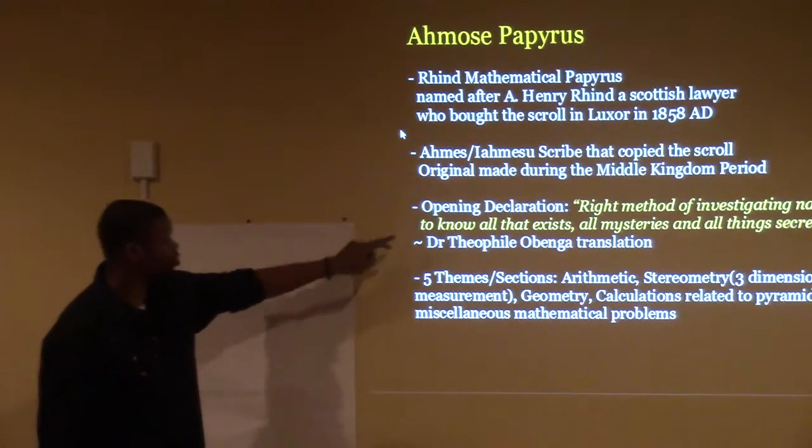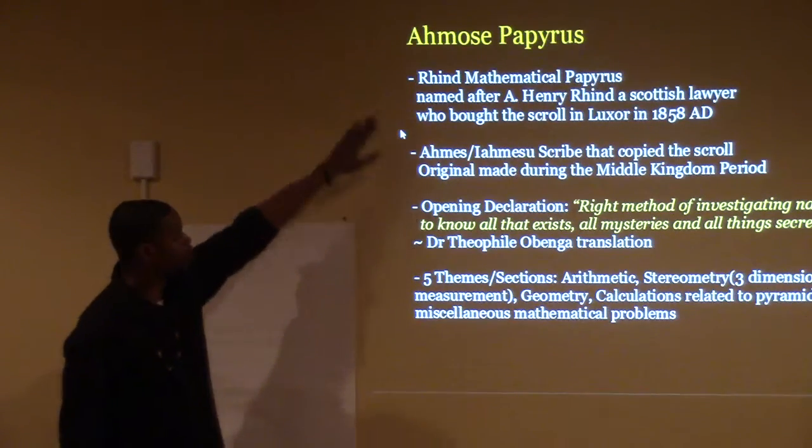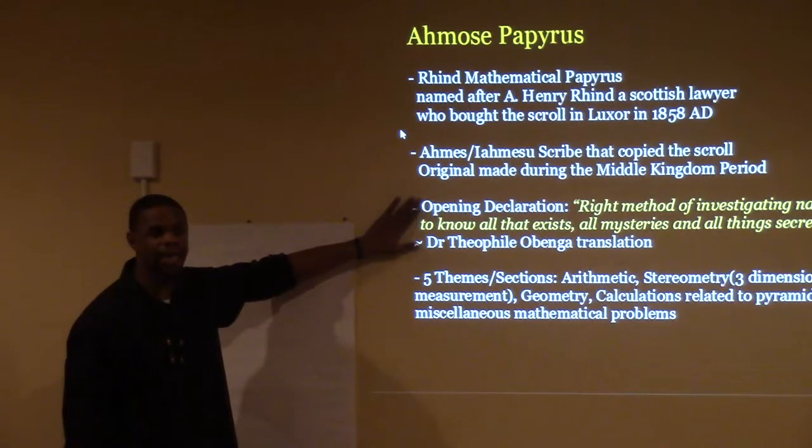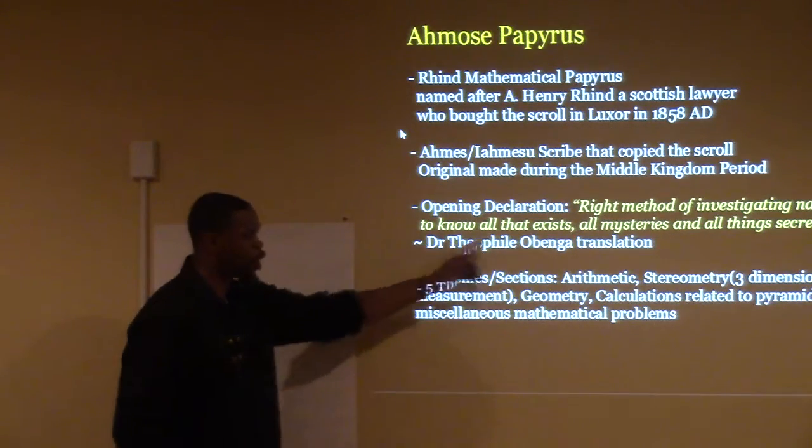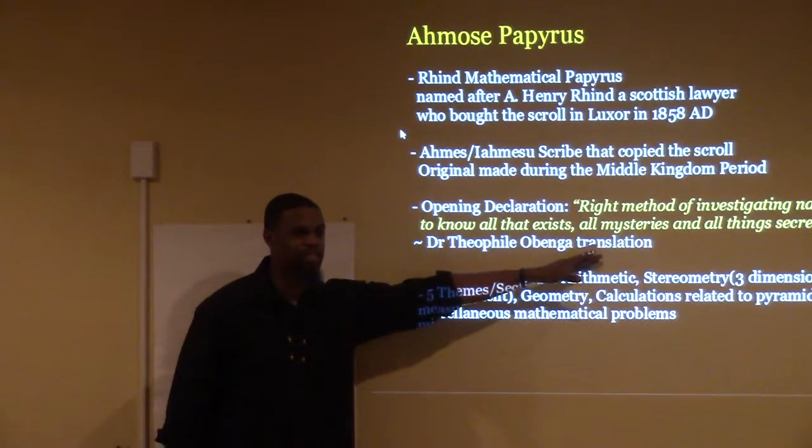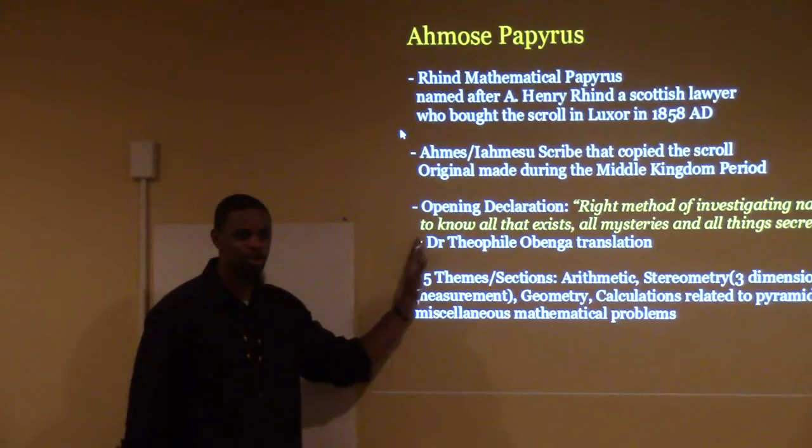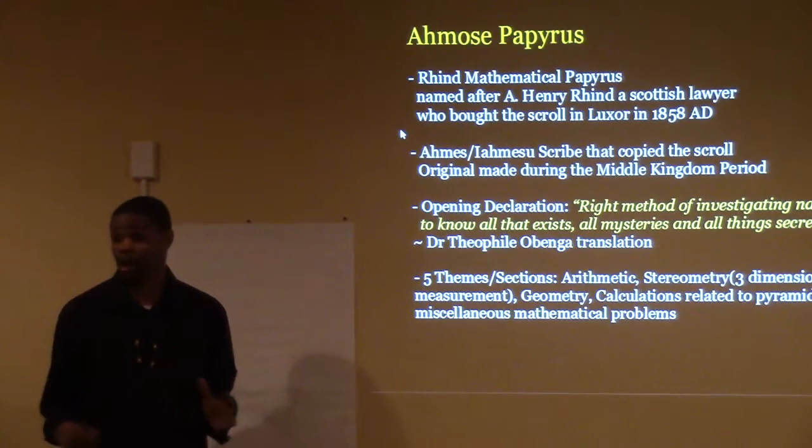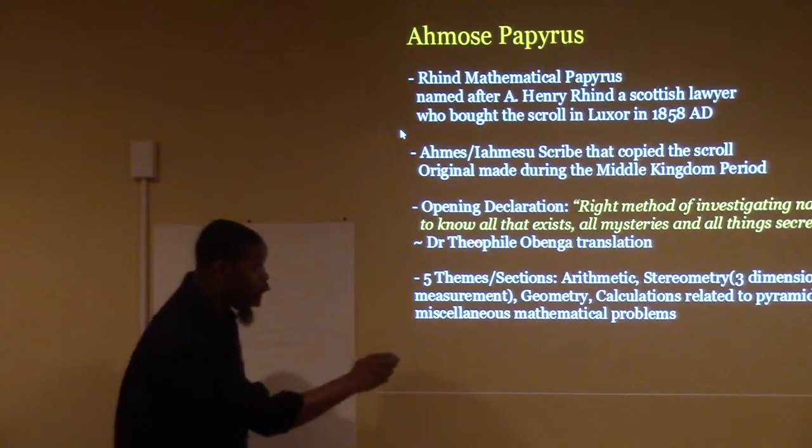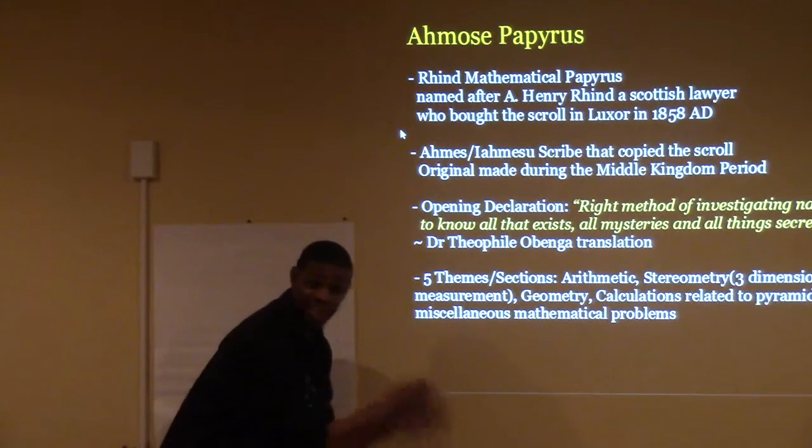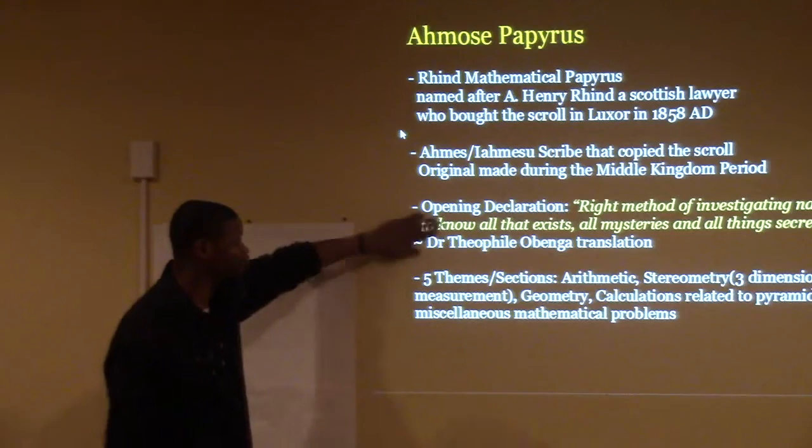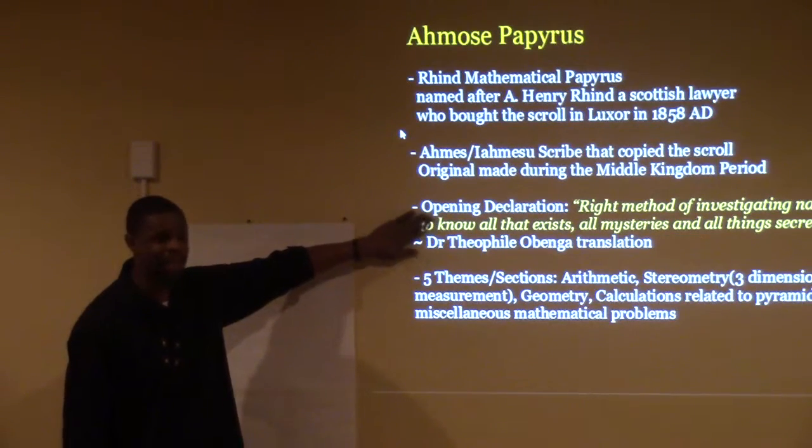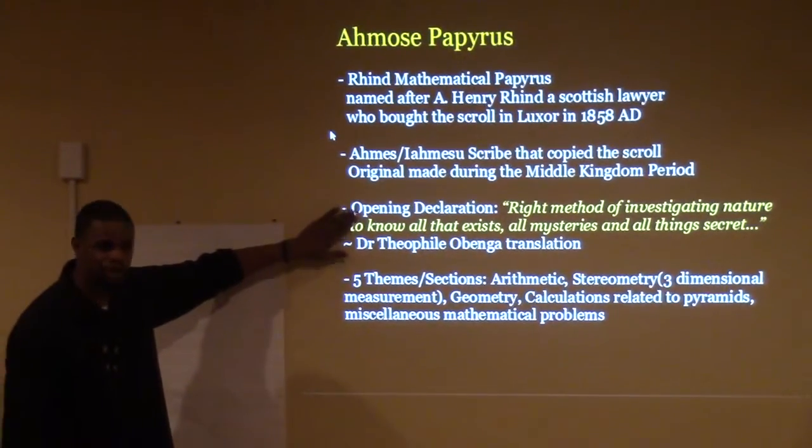Now look at the opening declaration on the Ahmose Papyrus right here. This is where we start getting to the Kemetic view of math. Look how they introduce math to the students. The right method of investigating nature to know all that exists, all mysteries, and all things secret. You tell me this is how you're going to introduce math, you tell me this is what I'm about to learn, I'm excited and ready to go right off the gym. I'm going to know all that exists, all mysteries, and all things secret based on math. Where's my pencil? I'm ready. Let's work. So that's how they introduced it relative to mathematics back in kindergarten. When you start studying this, you're going to know all that exists, unlocking all mysteries, all secrets. This is how you start math off right here.